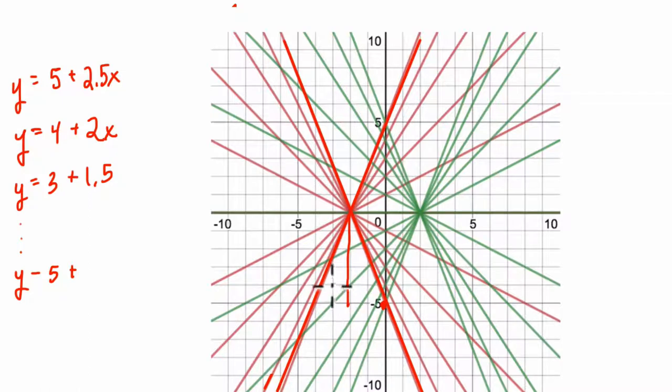We go down five, but up two on the x-axis. So that's negative two and a half. So I'm going to put, to fit the pattern, I'm going to write plus negative 2.5x. But you could just write negative five minus two and a half x.